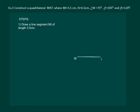Draw a line segment MI of length 3.5 cm. At point I, construct an angle of 105 degrees.